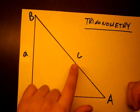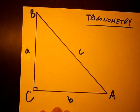And usually c is a hypotenuse, and the big C is the right angle in a right triangle.